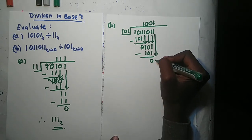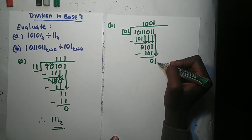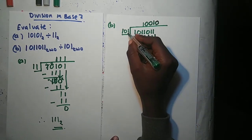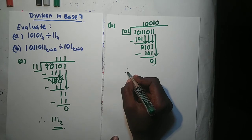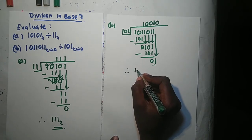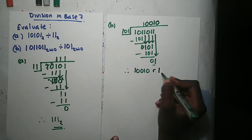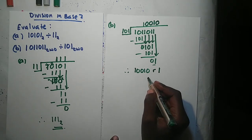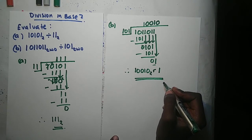101 into 1 — it can't. Since there are no more numbers to bring down, we write a 0 in the quotient. The number cannot go in and there are no more digits, so this 1 is our remainder. Therefore our answer is 10010 remainder 1 in base 2. You can write it as a mixed fraction if you want, but this is sufficient. This marks the end of our lesson, thank you.